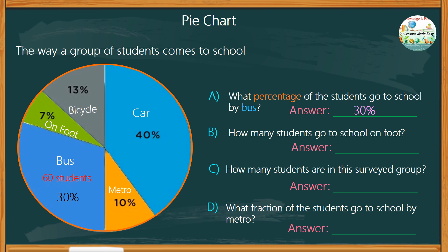Next, how many students go to school on foot? You can choose to work hard or work smart — let's do the easiest way. We can use the information we acquired earlier: 30% of the students who go to school by bus is 60. So look at the relationship between the percentage and the number of students — from 30 to 60, the number is just multiplied by 2. It means if 7% of them go on foot, that would be 14 students. We can also write the number of students for all other categories: 13% go by bicycle, which makes 26 students; by car, 40%, which equals 80 students; and 10% by metro, making 20 students.